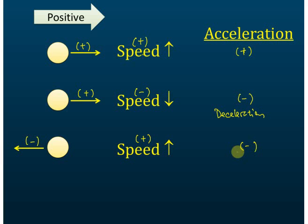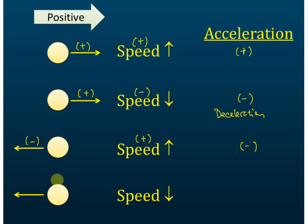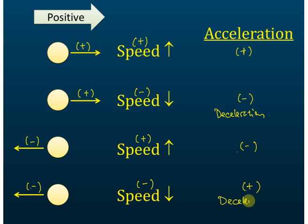The last case: the object moves to the left, so the direction is negative, and the speed goes down, so the change of speed is also negative. In this case, the acceleration is positive. But this is still deceleration. So you can see — positive acceleration but the object is undergoing deceleration. The positive or negative sign of acceleration also indicates whether the object moves in a negative or positive direction.